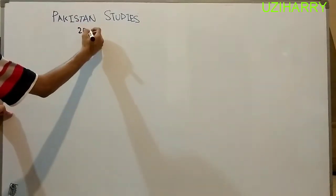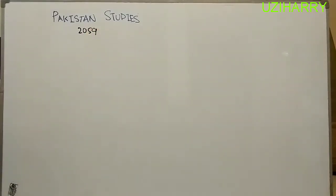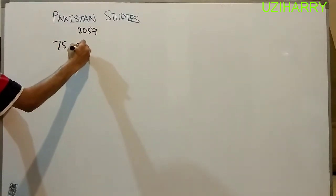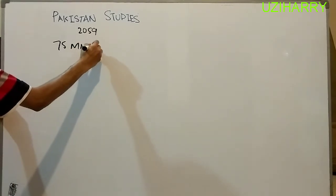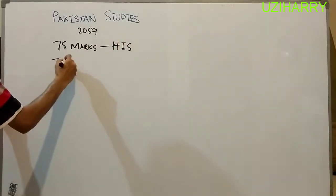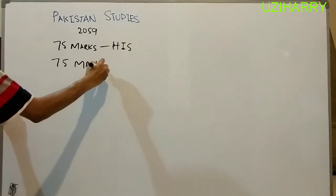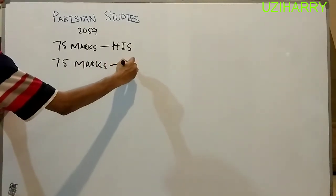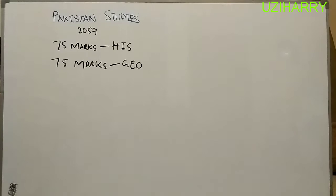Paper 1 is of history and paper 2 is about geography. The paper code for this level is 2059 and both papers are comprised of 75 marks for history and 75 marks for geography. In today's class we are going to discuss about the history paper, which is known as paper 1, while geography is paper 2.